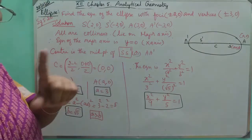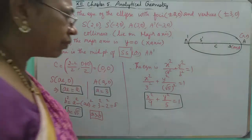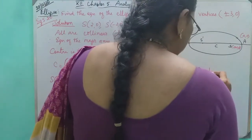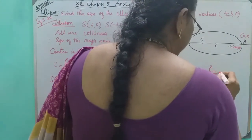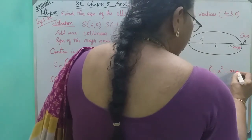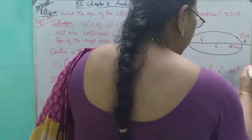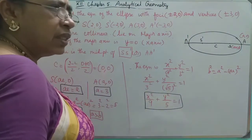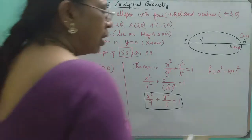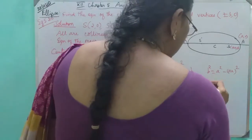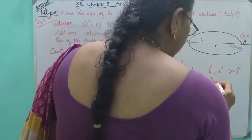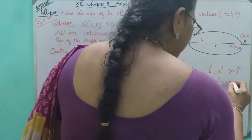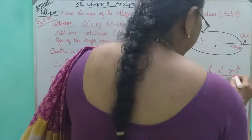b squared is equal to a squared minus ae the whole square. That is, b² = a² - (ae)². So A² and B² are found by subtracting: that gives us A² minus (ae)².